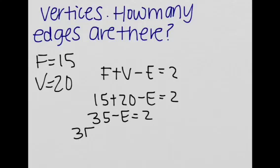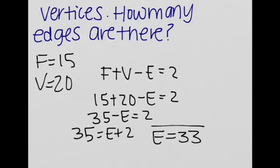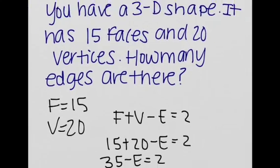So we have 35 is equal to E plus 2, and E is equal to 33. So there are 33 edges on this 3D shape.